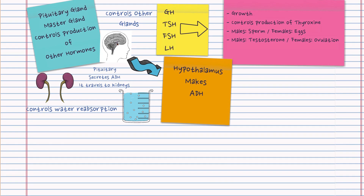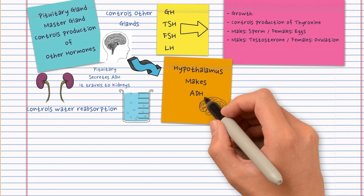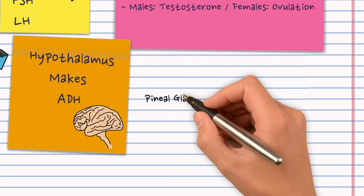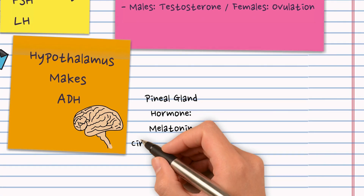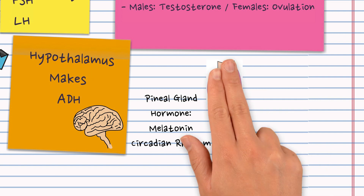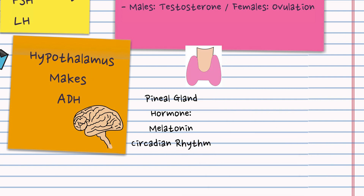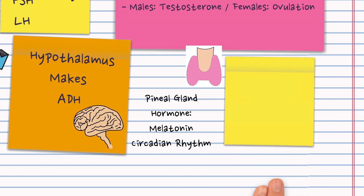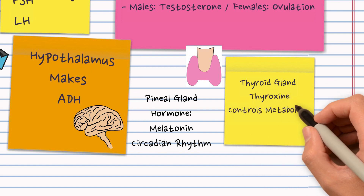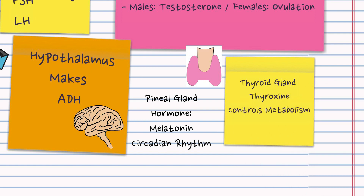Another gland located in your brain — really small — is the pineal gland. It makes the hormone melatonin, which controls your circadian rhythm. Next is the thyroid gland, located in your neck, which produces the hormone thyroxine. Thyroxine controls metabolism, so it's a really important, VIP hormone.